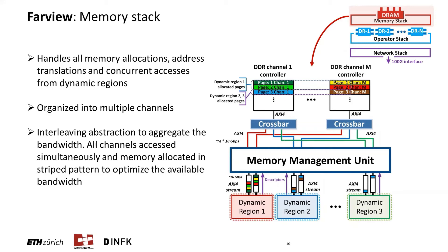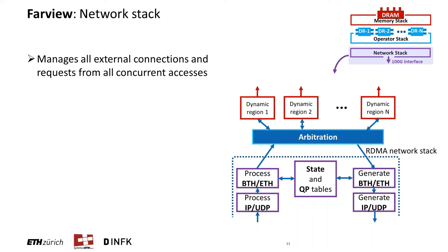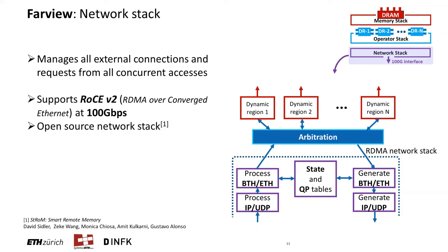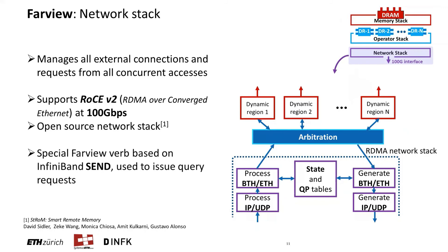The network stack manages all external connections and requests for all concurrent accesses. It supports RoCEv2 at 100 gigabits using the open-source network stack developed in our group. The stack is extended with out-of-order execution and fair sharing to support multiple dynamic regions. We also add a special Farview verb based on InfiniBand send to issue efficient query requests directly through a high-performance network fabric. The underlying transfer protocol does not change, making Farview compatible with commercial InfiniBand cards. The logic in the operator stack reacts directly to these requests without them being written to memory, which is one of the reasons why Farview has quite low latencies comparable to regular one-sided RDMA verbs.